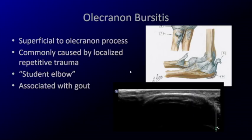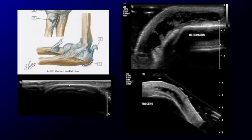Lastly, the olecranon bursa can fill with fluid. You really don't see much normally — just the olecranon bone and the bursa as a potential space, so all you see is skin and bone. If this fills with very little fluid and you press on it, you may obliterate that fluid and miss the diagnosis. What you'd hope to see is something obvious like this: here's the olecranon, and you see this is a patient with gout — the bursa is distended with fluid. This is the olecranon bursa, and this is olecranon bursitis.